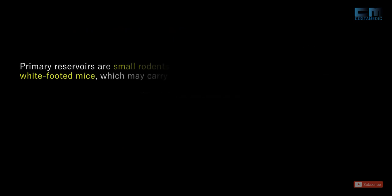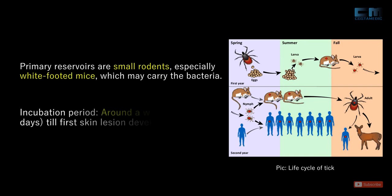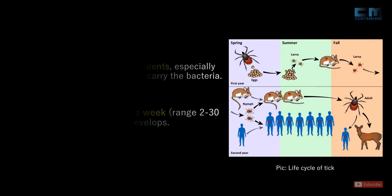Primary reservoirs are small rodents, especially white-footed mice, which may carry the bacteria. An uninfected tick becomes infected by biting a carrier rodent. A human may become infected from the bite of the infected tick, which injects the bacteria into the human skin with the bite. The incubation period is around a week, but the range is 2–30 days until the first skin lesion develops.